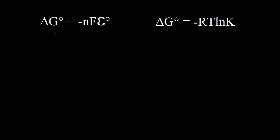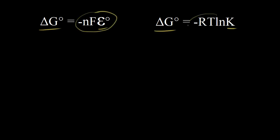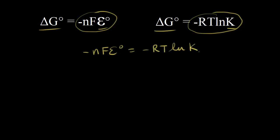We've already seen the equation on the left, which relates the standard change in free energy, delta G zero, to the standard cell potential, E zero. The equation on the right is from thermodynamics, and it relates the standard change in free energy, delta G zero, to the equilibrium constant, K. So we can set these equal to each other to relate the standard cell potential to the equilibrium constant. Since both equal delta G zero, we get: negative NF times E zero equals negative RT times the natural log of K.